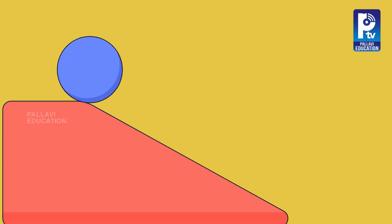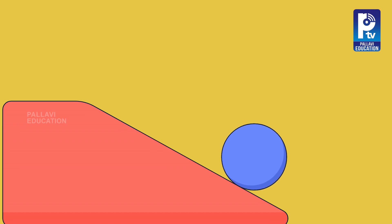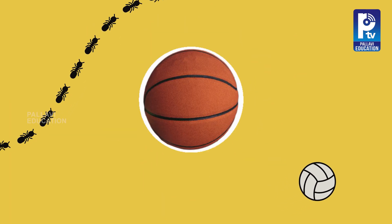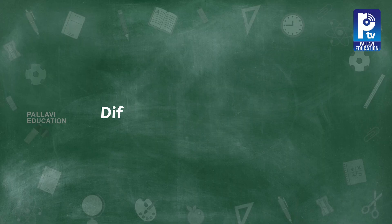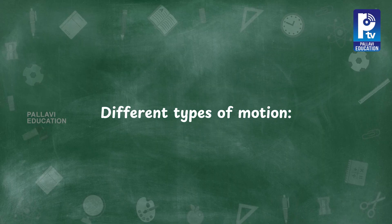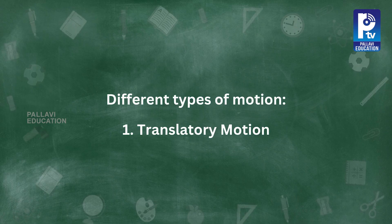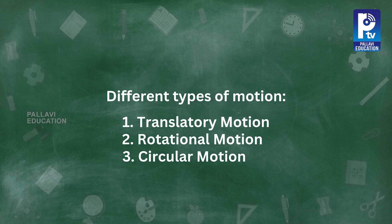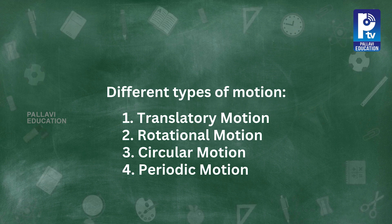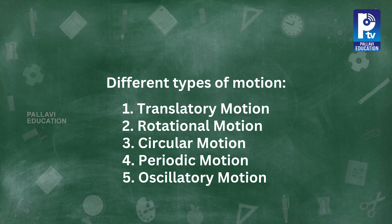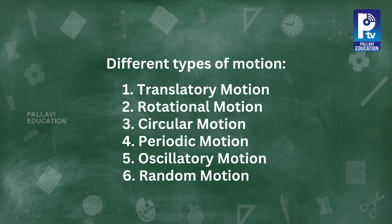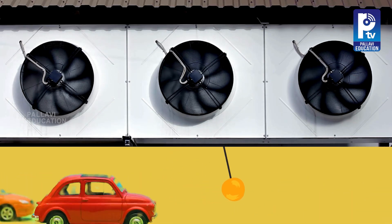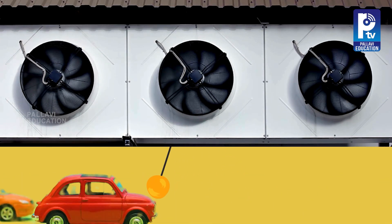Did you know that motion comes in many different types? Objects around us move in unique ways, and each type of motion tells us something interesting about how they move. Here are the seven types of motion we'll be exploring today: translatory motion, rotational motion, circular motion, periodic motion, oscillatory motion, random motion, and combined motion. Let's discuss each type of motion one by one, with simple examples to make it easy to understand.